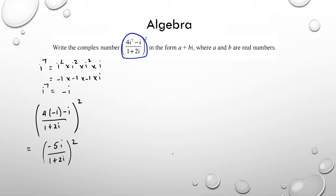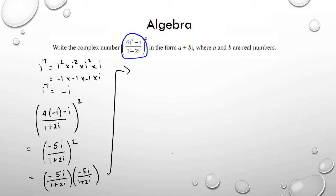Since the whole thing is squared, I multiply negative 5i over (1 plus 2i) by itself. The numerator becomes negative 5 times negative 5 which is 25i². The denominator expands as a quadratic: 1 plus 2i plus 2i plus 4i squared.